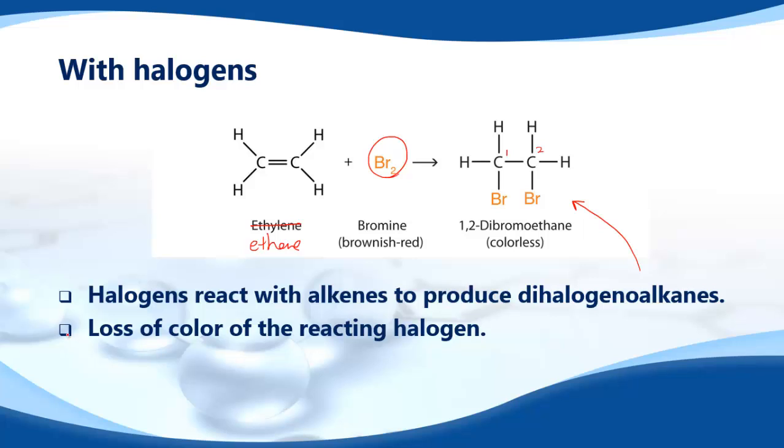We have a loss of colour of the reacting halogen. Look, bromine is a brownish red colour, but the product, 1,2-dibromoethane, is colourless. That's an important point.